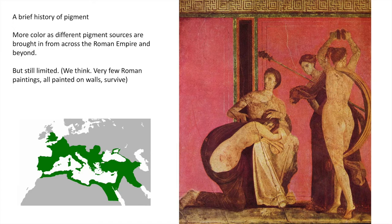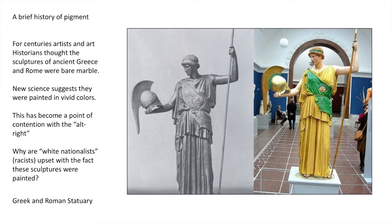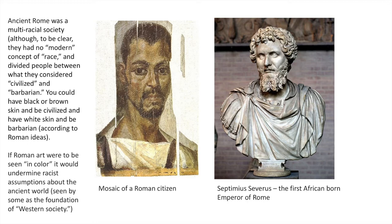As time went on, more and more pigment sources were brought into various empires — in China, the Roman Empire, and so on — expanding the color palette of artists. It was still limited. Very few Roman paintings survive, almost all painted on walls; many that remain are from Pompeii, where they were sealed by volcanic ash. It was assumed that ancient Roman and Greek statues were bare marble, black and white, but new science suggests they were actually painted in vivid colors. Ancient Rome was a multiracial society, though they had no modern concept of race — they divided people into civilized and barbarian regardless of skin color.